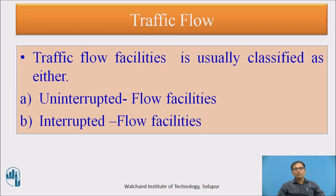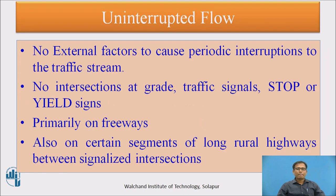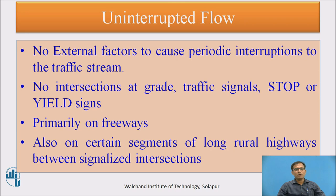Traffic flow facilities are classified in two ways: uninterrupted flow facilities and interrupted flow facilities. Uninterrupted flow facilities are those where there are no external factors causing periodic interruptions to the traffic stream. External factors include traffic signals and stop or yield signs. Even on long rural highways between signalized intersections, uninterrupted flow can exist. It primarily exists on freeways.